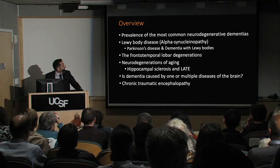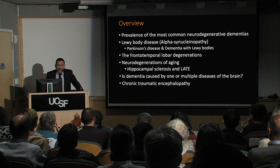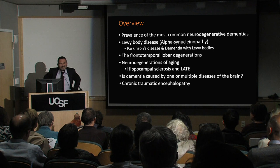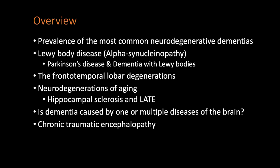Then we'll talk about the frontotemporal lobar degenerations, and a relatively new topic: neurodegeneration of aging — LATE — which has been better formalized really just recently, so this is breakthrough information. We'll discuss whether dementia is caused by one disease per person, or whether more than one pathological change cooperates to cause dementia. Finally, we'll talk briefly about chronic traumatic encephalopathy, related to trauma, which is becoming a main concern among patients coming to clinic with a history of head trauma.